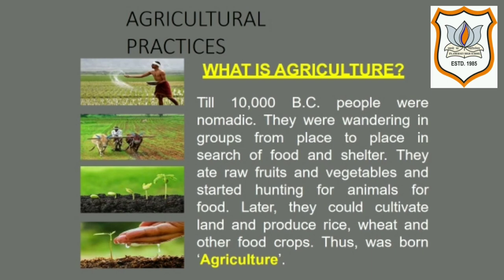Till 10,000 BC, people were nomadic. They were wandering in groups from place to place in search of food and shelter. They ate raw fruits and vegetables and started hunting animals for food. Later, they learned to cultivate land and produce rice, beans, and other food crops. Thus was born agriculture.